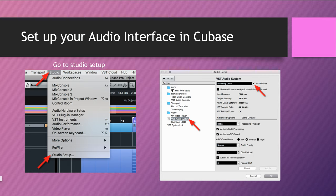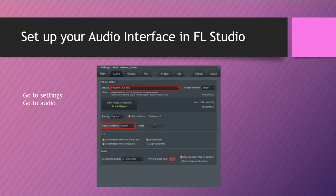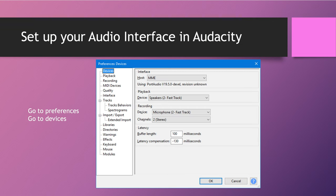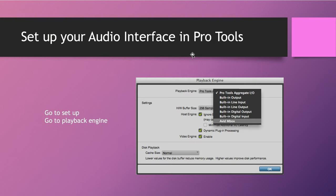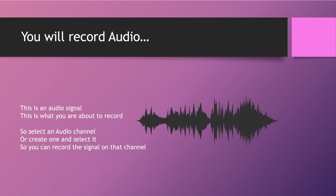I keep saying 'input' because the audio interface is your input — but also output, which we'll talk about later. For FL Studio: click on Settings, click on Audio, and pick your audio interface. It's the same thing for every DAW. For Audacity: click on Devices and pick your audio interface. For Pro Tools: click on Playback Engine and choose your audio interface — same process everywhere.